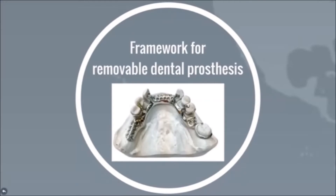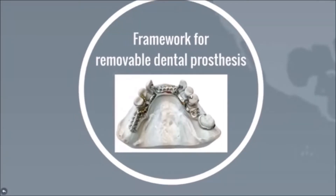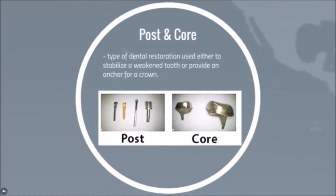For the framework of removable dental prostheses, normally base metal is used, which requires higher strength, such as nickel-chromium or cobalt-chromium. Post and core is a type of dental restoration that is used either to stabilize a weakened tooth or provide an inner core to a crown.